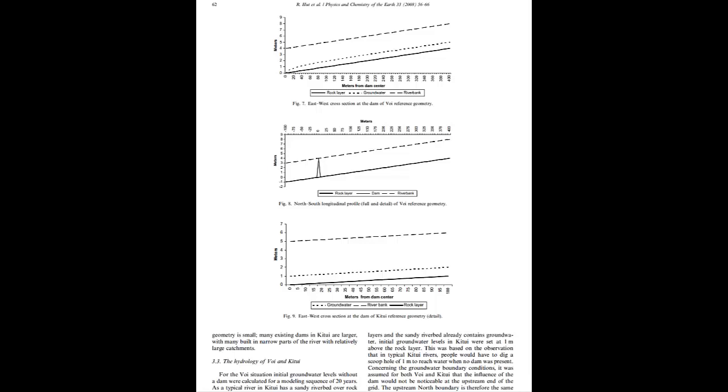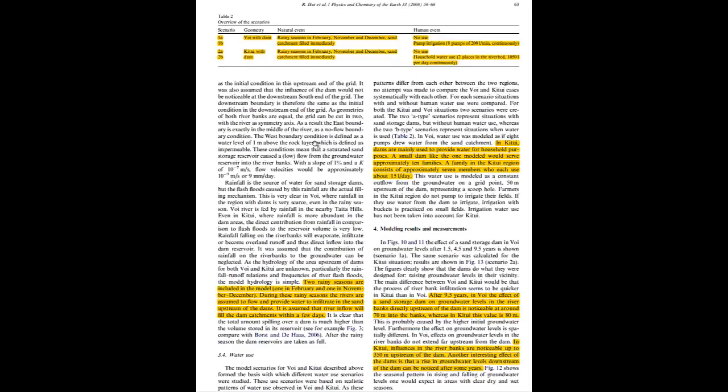They have two scenarios: Voi, where they have a lot of water extraction for irrigation, and Kitui, where extraction is much smaller. For each location, they have no use—the water just stays behind the dam—and then usage scenarios. They have two rainy seasons, and at the beginning of each, the dam fills up immediately, then it slowly seeps into the side or people pump water out. The big difference is that in Voi there's a lot of water usage—cubic meters per day—while in Kitui it's just for family use, liters per day.